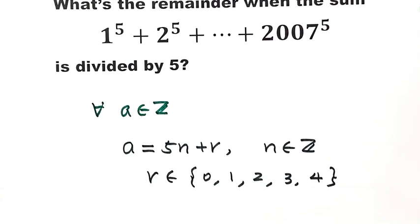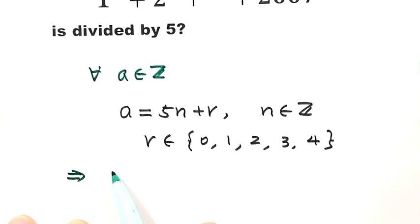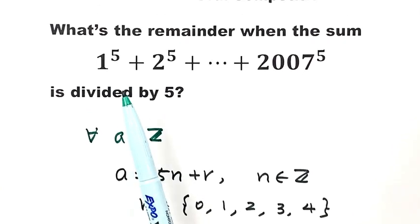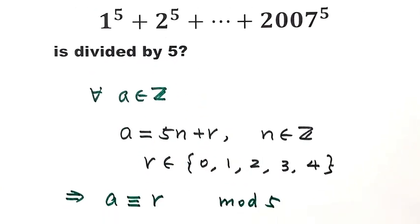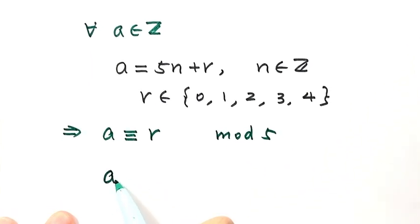So then when a is divided by 5, then a has a remainder r when divided by 5, with r in this range. Because here we have power 5, now let's see. From here, a and r have the same remainder.